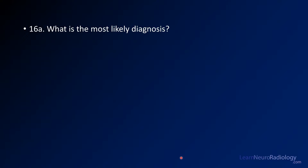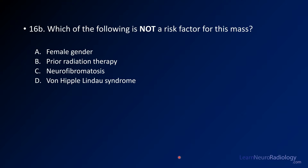Your first question is: what is the diagnosis? Your second question is: which of the following is not a risk factor for this mass? So you have to first come to the conclusion of what you think the mass is, and then once you have that, determine which of these are risk factors.